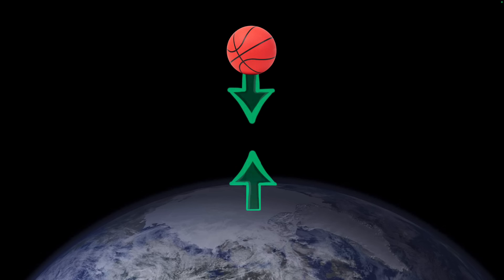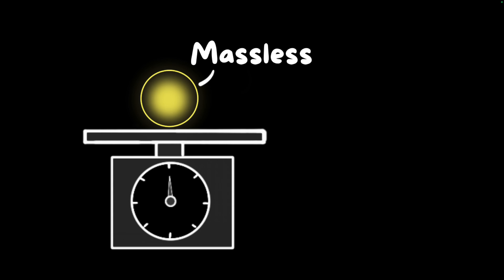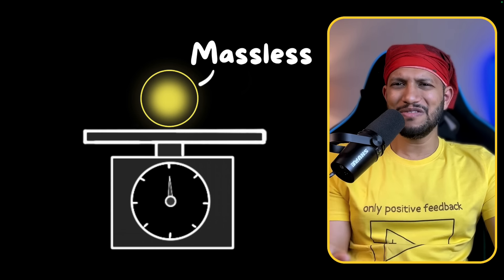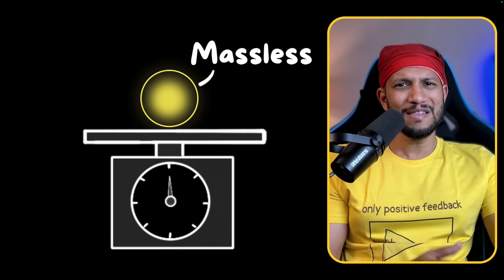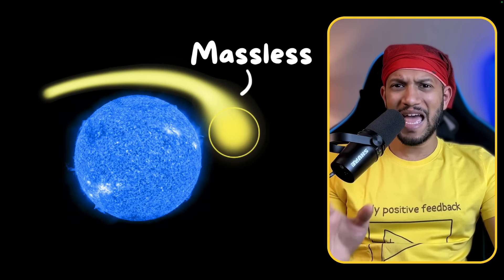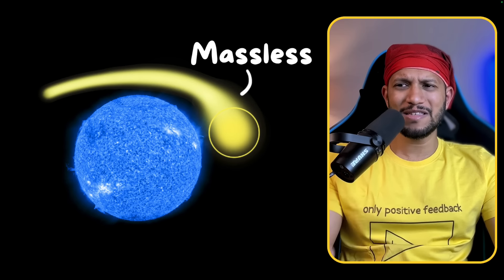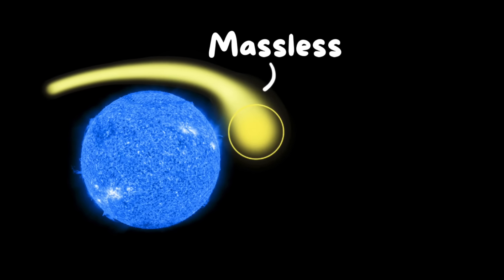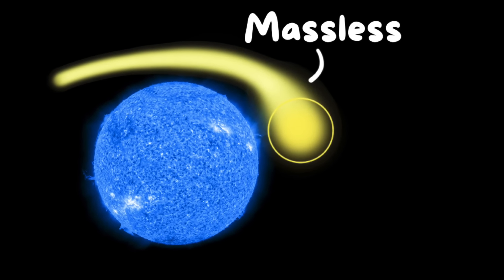Gravity is a force of attraction between massive objects, right? But light is massless. So I always thought it shouldn't be affected by gravity. But then I learned that the path of light can be bent by very massive stars. So what's going on? Why is gravity affecting massless light?